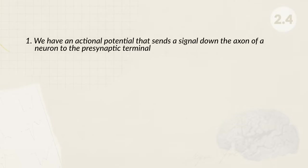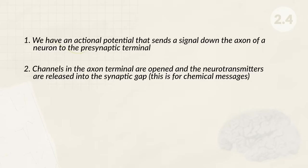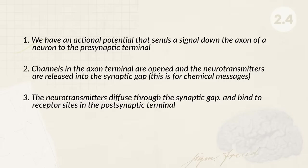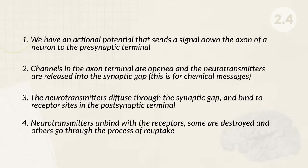When trying to remember this chain of events, try to remember them in the following order. One: an action potential sends a signal down the axon to the pre-synaptic terminal. Two: channels in the axon terminal open and neurotransmitters are released into the synaptic gap. Three: the neurotransmitters diffuse through the synaptic gap and bind to receptor sites in the post-synaptic terminal. And four: neurotransmitters unbind with the receptors — some are destroyed and others go through reuptake.